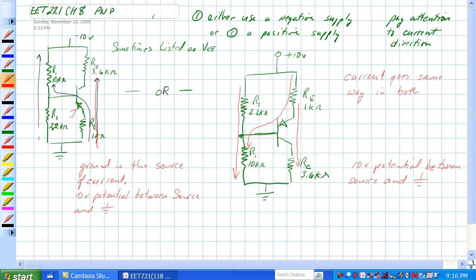Current flow is this way, from emitter to collector. It's in the direction of the arrow.